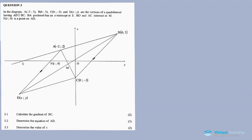All right, question three from the November 2018 paper — analytical geometry. In the diagram, ABCD are the vertices of a quadrilateral with AD parallel to BC. BA is produced and has an x-intercept at E. BD and AC intersect at M — those are the diagonals intersecting at point M. N is a point on line AD.